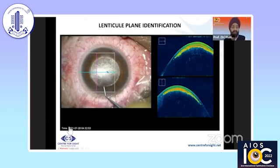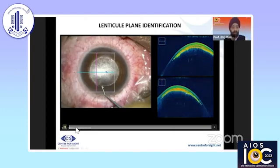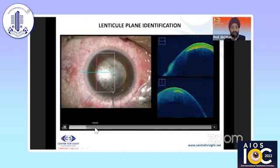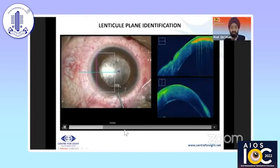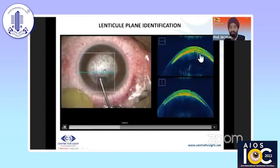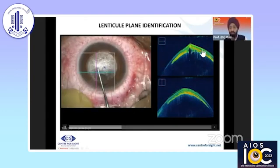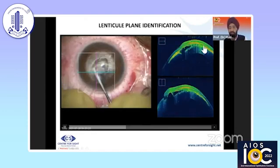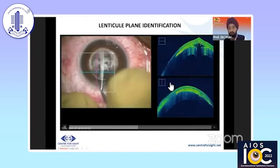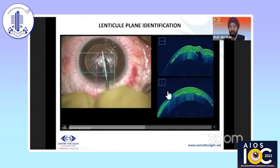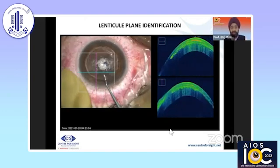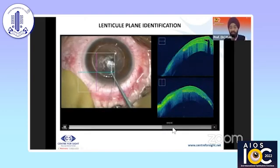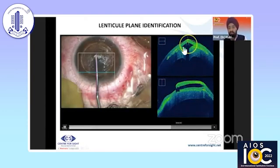This is lenticule plane dissection as seen on intraoperative OCT. You can see we are entering, and in this particular case we have gone into the posterior plane — you can see that clearly. This is the lenticule, but we have not gone into the anterior plane. So wrong-plane dissection can easily be identified on the OCT. We then go into the anterior part of the lenticule and again you can see the anterior part clearly — a very good image.